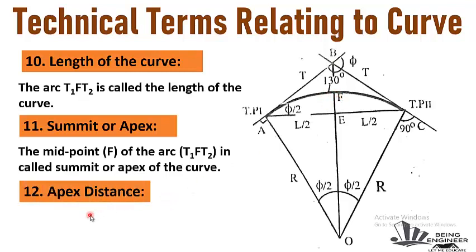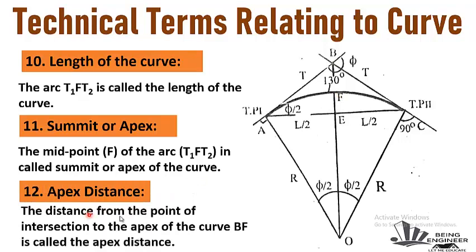The twelfth term is apex distance. The distance from the point of intersection to the apex of the curve, BF, is called the apex distance. Point F is the summit or apex of the curve, and the distance between the intersection point and the apex of the curve is called the apex distance, which is equal to BF.